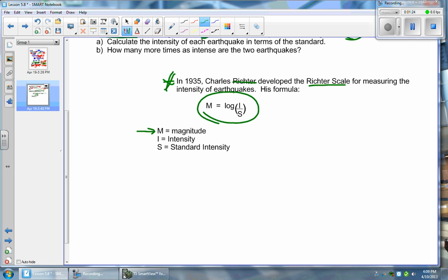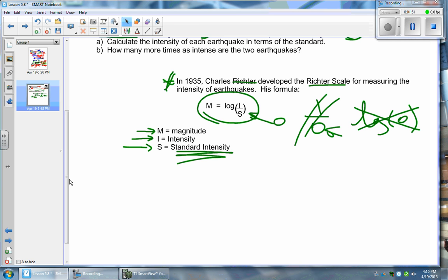M stands for the magnitude of the quake. I stands for the intensity of the quake. And S is what we call the standard intensity. Richter knew that you could not make anything a zero here. Because think about it - I over zero doesn't work. Not a permissible value. And if you do get a zero, a log of zero doesn't work because you know that all logs are greater than zero.